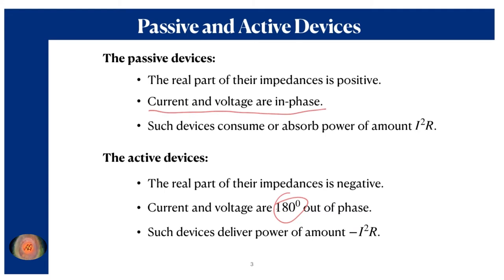Due to this reason, the power across the device is minus I²R instead of plus I²R. When we consider positive I²R, the device is dissipating or absorbing power. With minus I²R, the power is being delivered to the external circuit connected with the device. That is why the GAN and IMPATT diodes are called active devices — they differ from passive devices by the amount of power they deliver versus absorb.